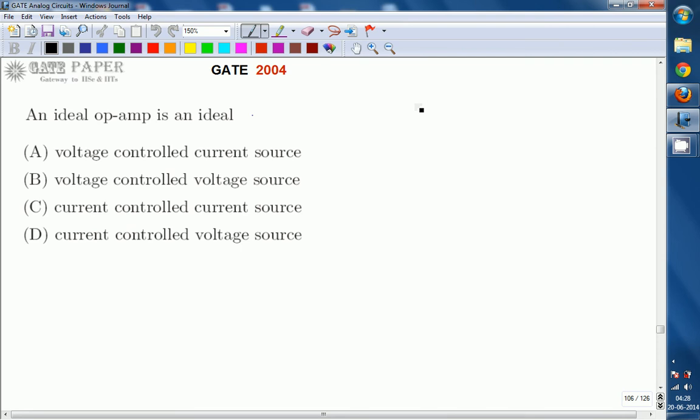We know the symbol of operational amplifier. This is the symbol of operational amplifier. Output is V0 and this is plus minus. Plus minus implies non-inverting and inverting terminals. The difference between this one is VID. It will be specified like this.